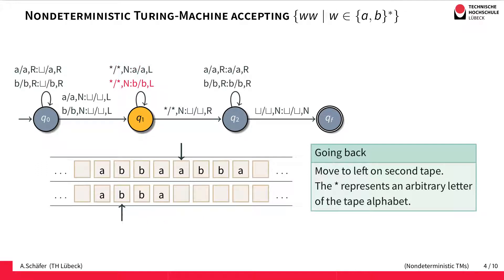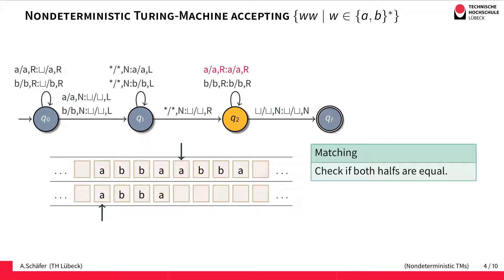In Q1 we go back on the second tape until we reach the left boundary of the copied text, then we change state and move to Q2, where we perform the matching between the first and the second tape. Here we check that both halves actually coincide and verify that the guess was correct.